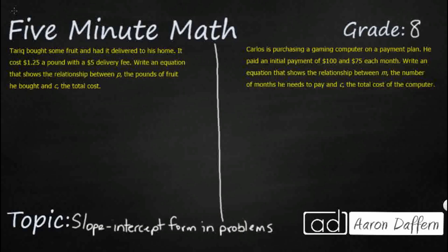Tariq bought some fruit, had it delivered to his home and we're going to get some money here. We're going to get $1.25 a pound with a $5 delivery fee. Now they're going to start giving us some variables. That should be our first clue that we're going to need to write this in our slope intercept form, which is y equals mx plus b.